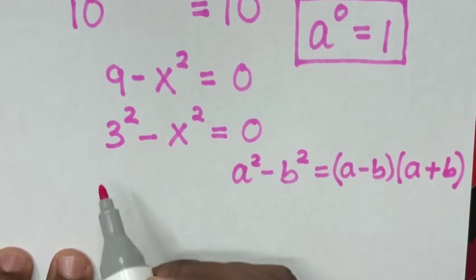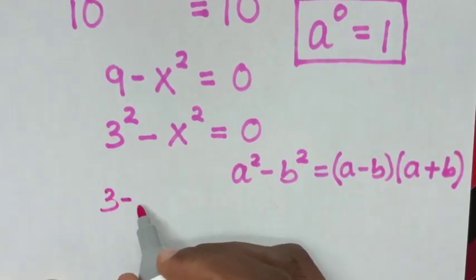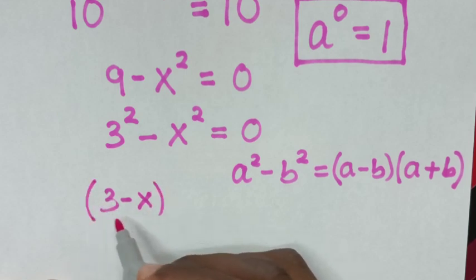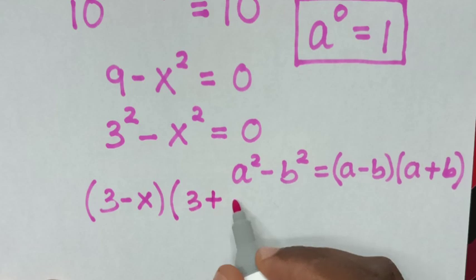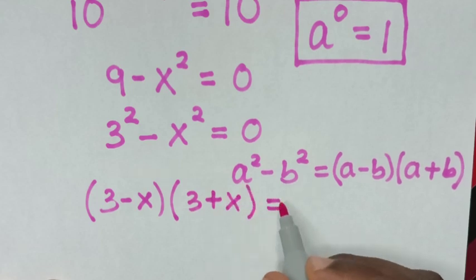So in here, it will be 3 minus x times 3 plus x equals 0.